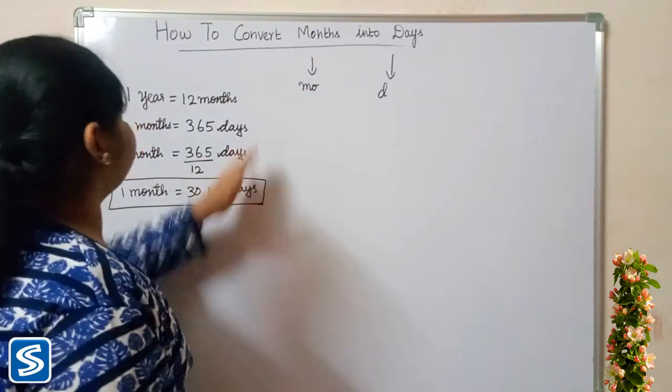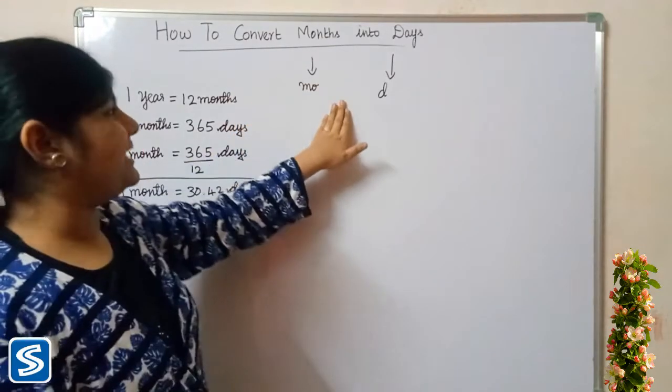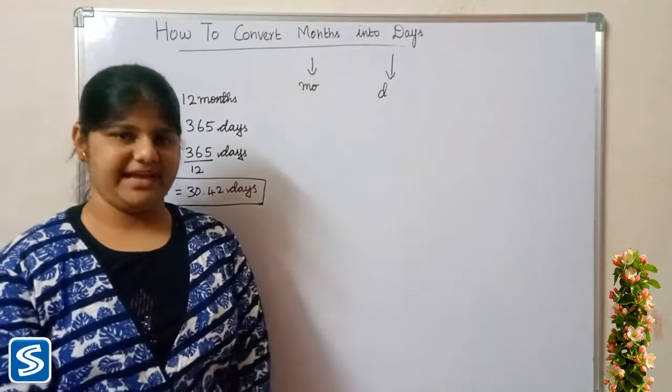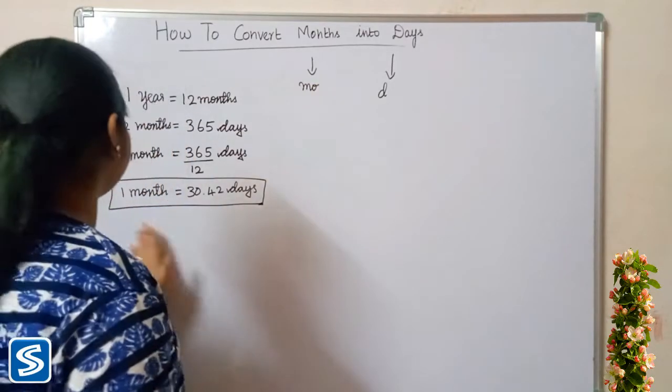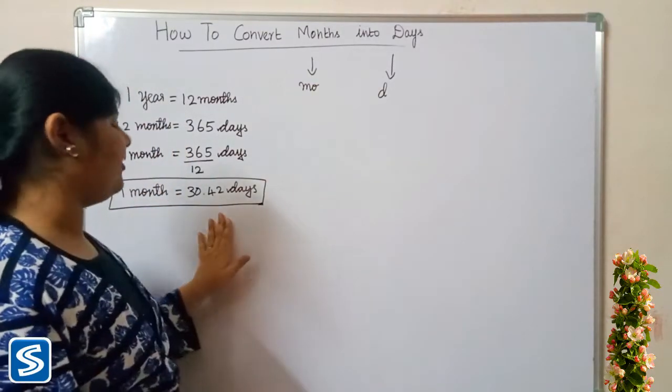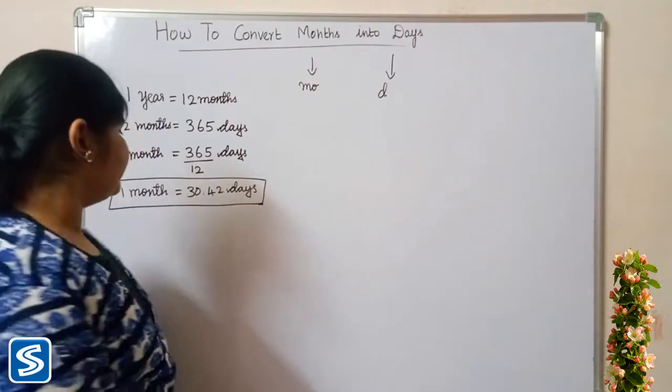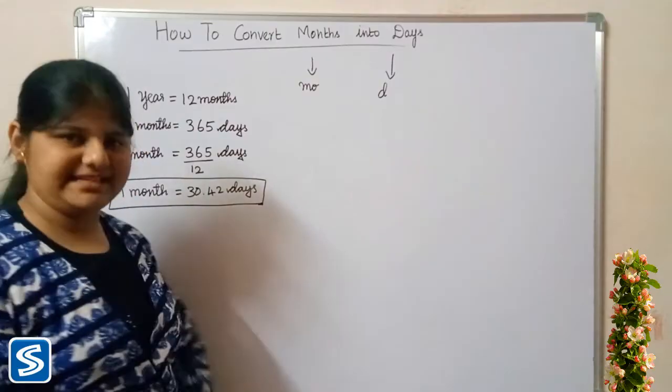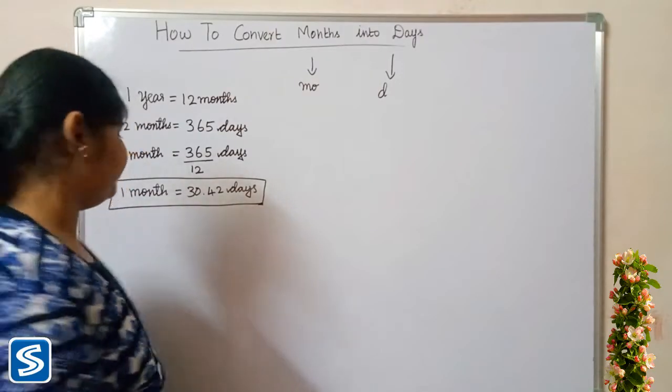So the formula for converting months into days is: one month is equal to 30.42 days. Now we will take some examples.